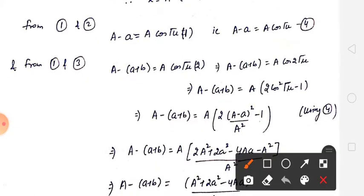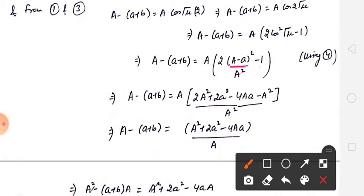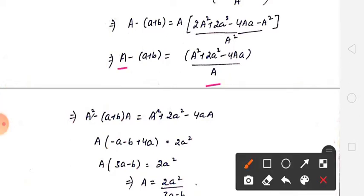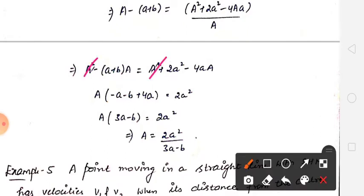अब यहाँ से amplitude की value find out कर ली है। इसको simplify करेगे — cos(2θ) को हम लिख सकते हैं: 2cos²θ - 1. So (A - a - b) = A·(2cos²(√μ) - 1). यहाँ से cos²(√μ) की value निकाली: (A - a)² / A². Value put करके simplify किया। A² से A² cancel हो गया। Coefficients combine करने के बाद amplitude A की value आ गई: A = 2a² / (3a - b). यह हमने prove कर दिया।